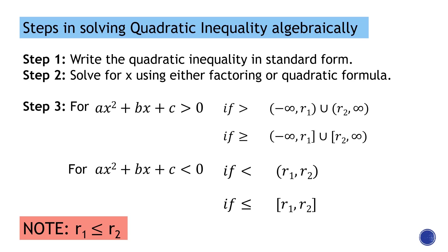The first step is we need to write the quadratic inequality in its standard form. The second step is we need to solve for x using either factoring or quadratic formula. You can use any method you want — completing the square, the box method — but I prefer factoring or quadratic formula.